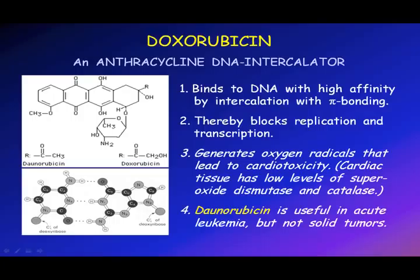Doxorubicin is an anthracycline DNA intercalator that generates oxygen radicals leading to cardiac toxicity. Before this was understood, I treated patients repeatedly until their ejection fractions dropped to the point of symptomatic cardiac failure.